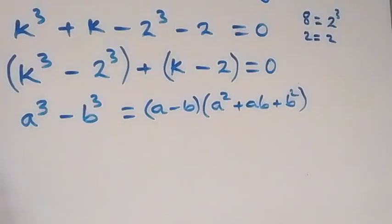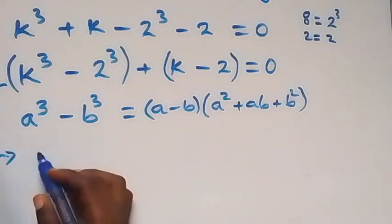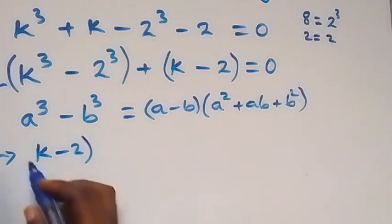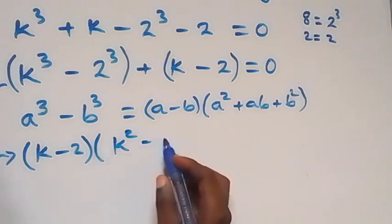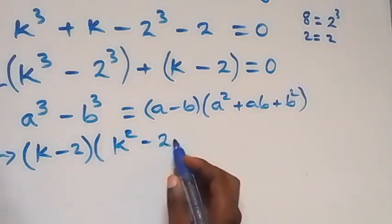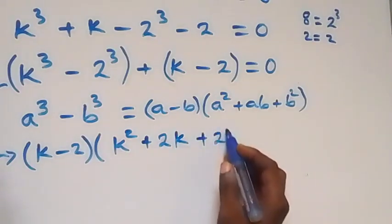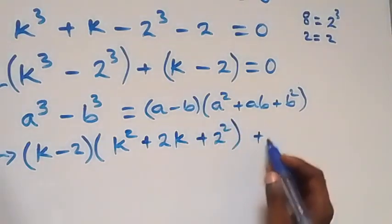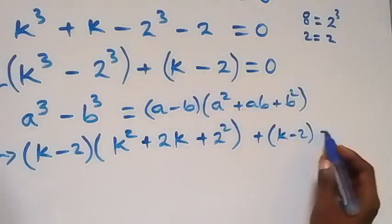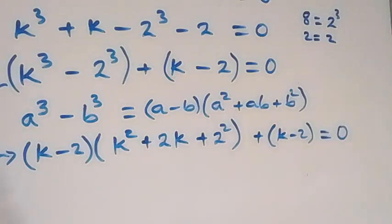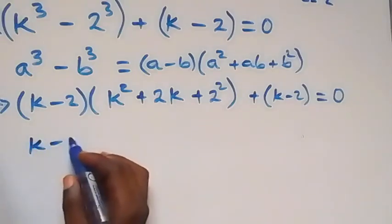And when we apply that here, what we have in this bracket becomes k minus 2 multiplied by k squared plus 2k plus 2 squared, close bracket, then we have plus the other bracket, which is k minus 2 equals to 0.